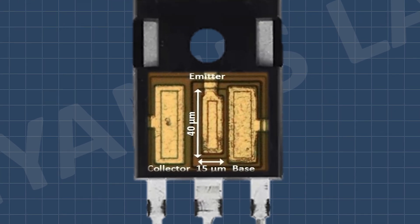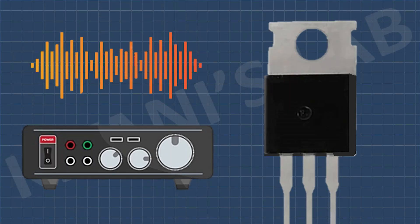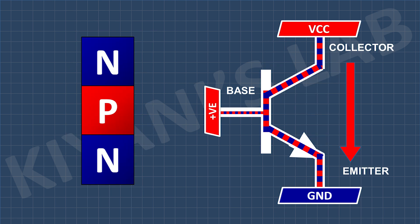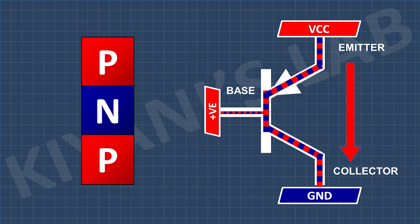Transistors are semiconductor devices that function as amplifiers and switches. The two most common types are NPN and PNP. In an NPN transistor, current flows from collector to emitter when the base is activated. In PNP, current flows the opposite way — from emitter to collector when the base is activated.